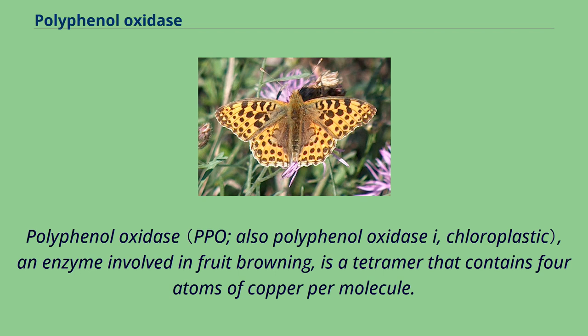Polyphenol oxidase, an enzyme involved in fruit browning, is a tetramer that contains four atoms of copper per molecule.